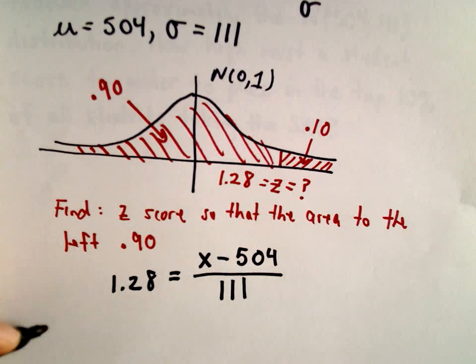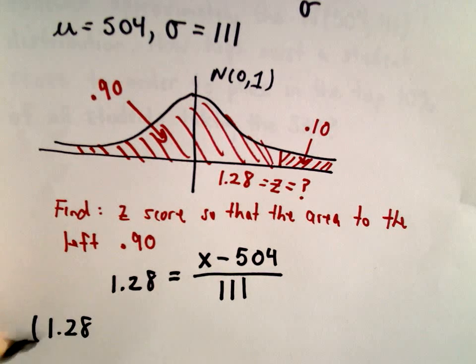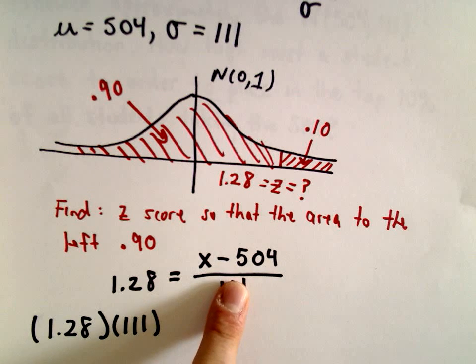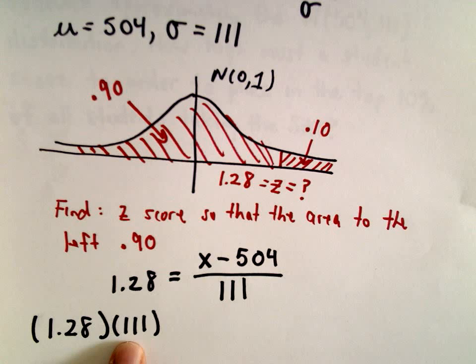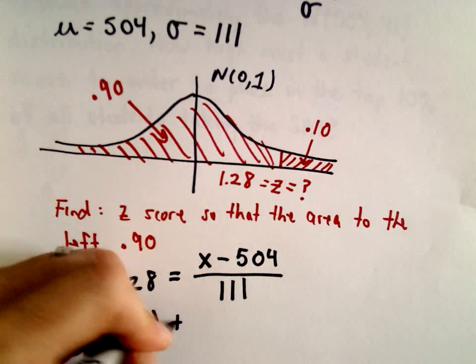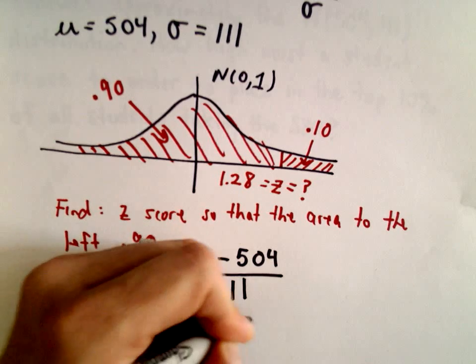After doing the arithmetic here, if you solve you would multiply both sides by 111, and then you would have 1.28 multiplied by 111 equals x minus 504. So then I can simply add 504 to that.